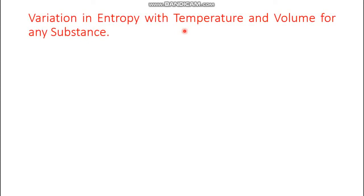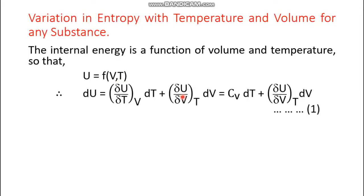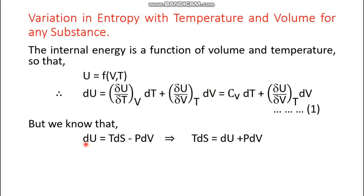First, we will find out the relationship for variation of entropy with temperature and volume for any substance. We start from the expression of internal energy as a function of volume and temperature: U = f(V, T). Its total differential dU has the expression (∂U/∂T)_V dT plus (∂U/∂V)_T dV. Since (∂U/∂T)_V equals Cv, this becomes dU = Cv dT + (∂U/∂V)_T dV. This is equation number one.